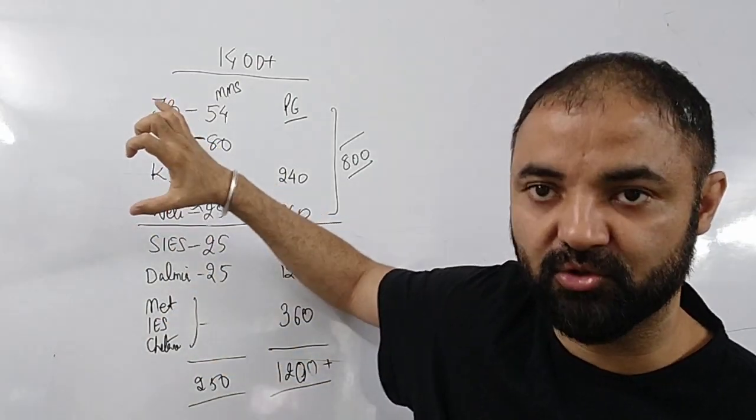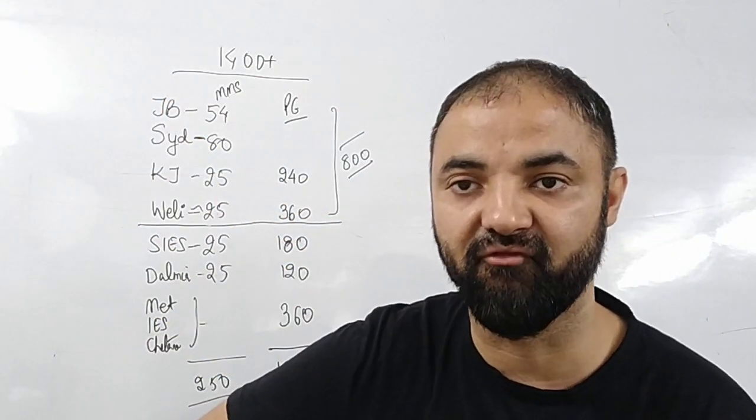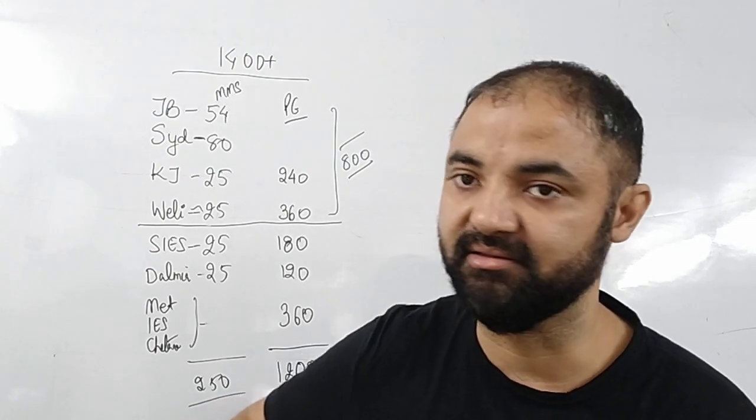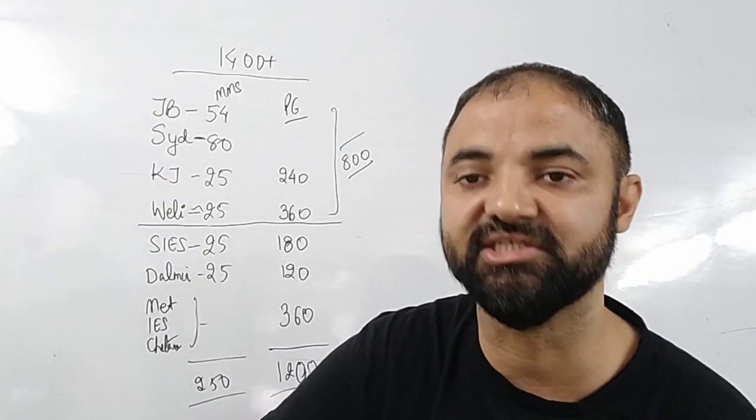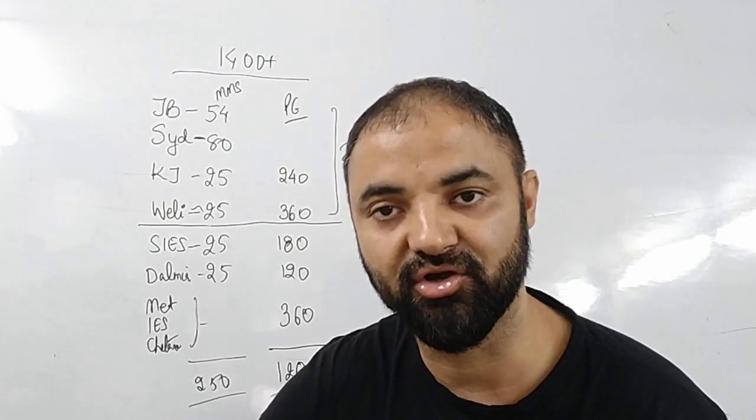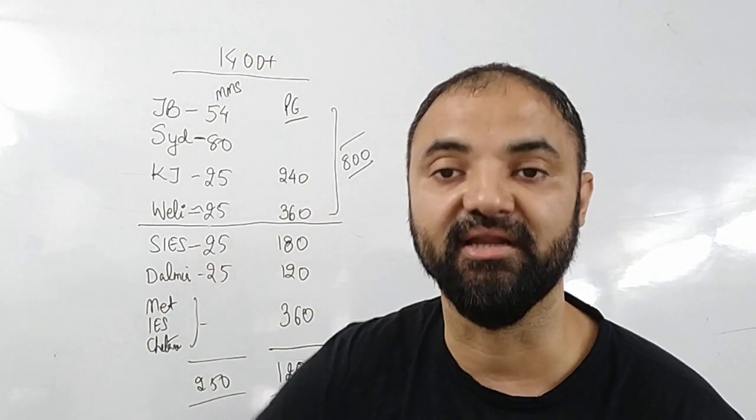Then there are the kind of students who only want top 4 colleges - JB, Sydenham, Somaya, Willinker. Then JB, Sydenham. Then only JB. Whichever category you belong to, whichever type of student you belong to, or your target is, but there are more than enough seats to target.